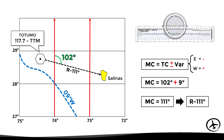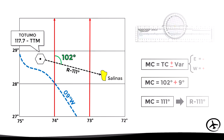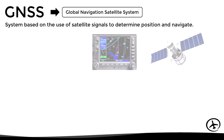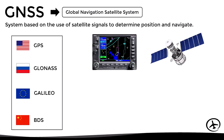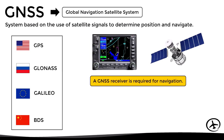Now that we have seen how NAVAIDs can be used as reference in VFR flights, let's move on to the GNSS. GNSS stands for Global Navigation Satellite System and, as its name suggests, it is based on the use of satellite signals to determine the current position of the aircraft and eventually navigate. Even though the most famous GNSS system is the GPS, there are many others, such as GLONASS from Russia, Galileo from the European Union, and Beidou from China. Independently of the GNSS system used, a special dedicated receiver is required.